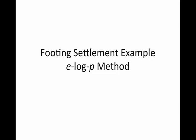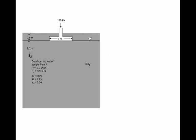Hello, I'm Professor Kitch, and in this example I'll be showing you how to calculate footing settlement using the ELogP method. For this example, we'll be considering a square footing that's one meter square on the side and carries a 120 kilonewton load. The footing is founded half a meter deep on a clay layer. As shown in this example, we have data from a lab test which was performed on a sample taken at point A, and the data is shown here.